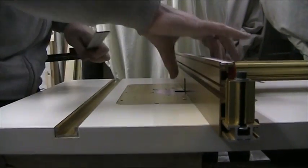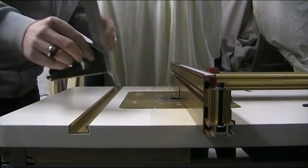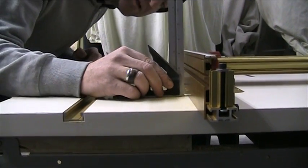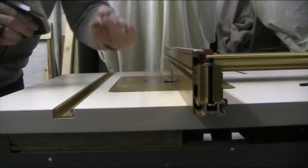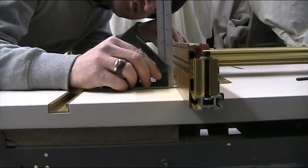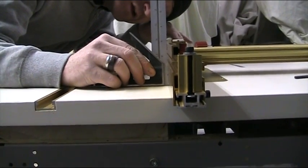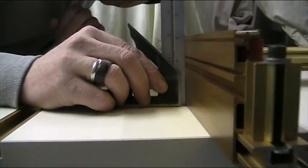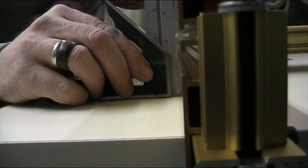Okay, so now we've got the fence installed. Now we have to check to see if the fence is completely square with the table top. We've already checked this and undone the nuts, but as you can see, it is not a hundred percent square.